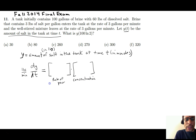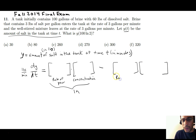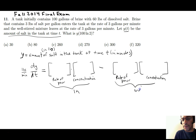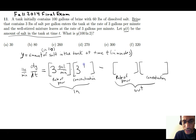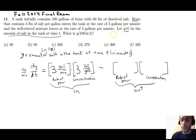dy/dt equals the rate of pour times the concentration for what's coming in, minus that for what's going out. The units work like a chemistry problem — they cancel out to give the right unit. You're pouring in at 3 gallons per minute, and the brine being poured in has 3 pounds of salt per gallon, so the gallons cancel and you get pounds per minute.